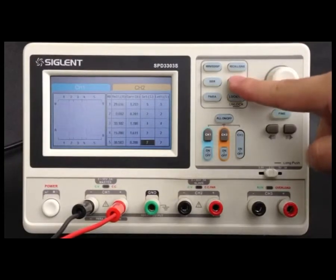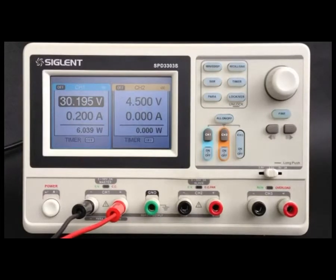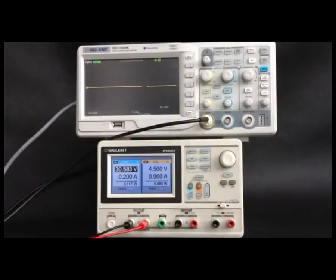Press timer again to exit the current interface and enter the main system interface. Switch on the channel output.